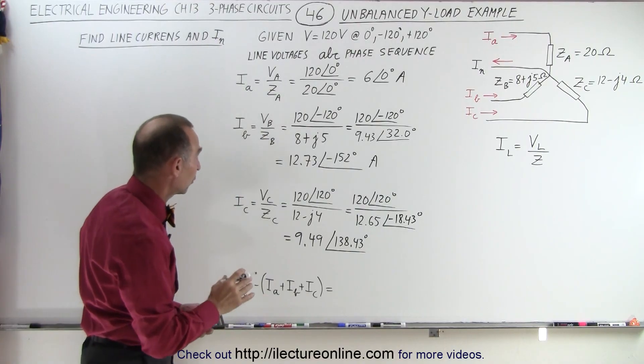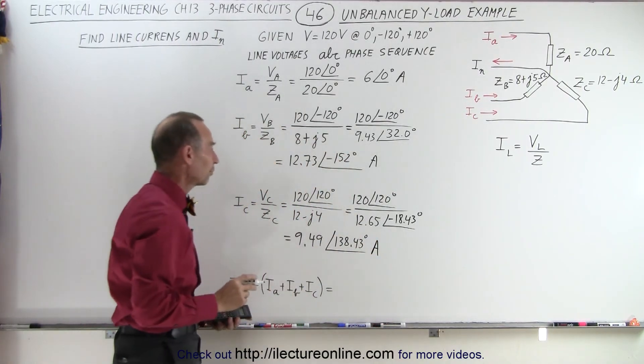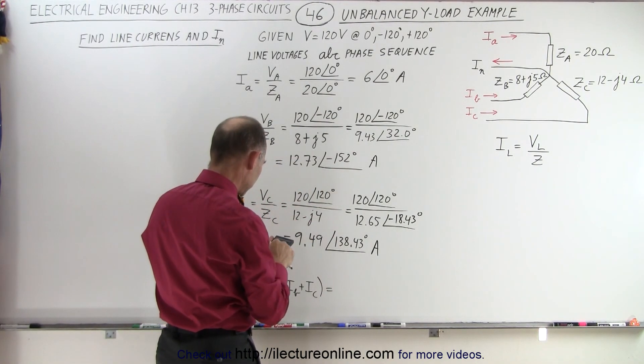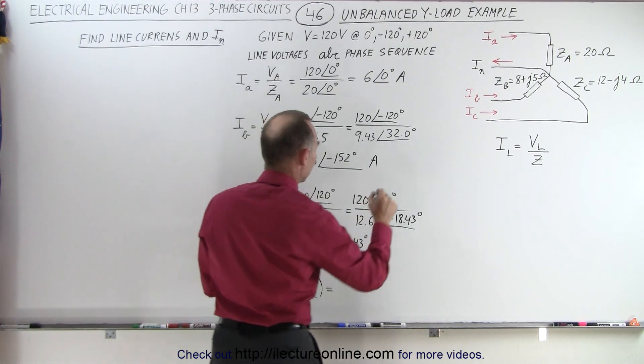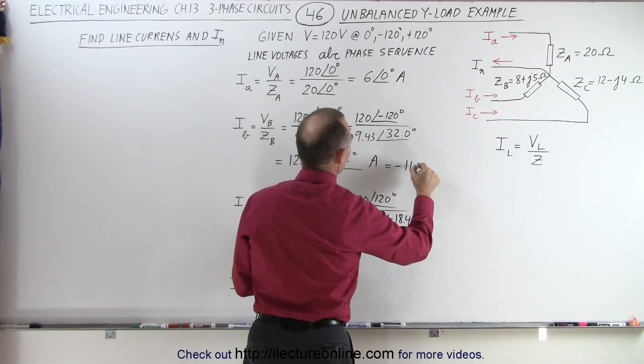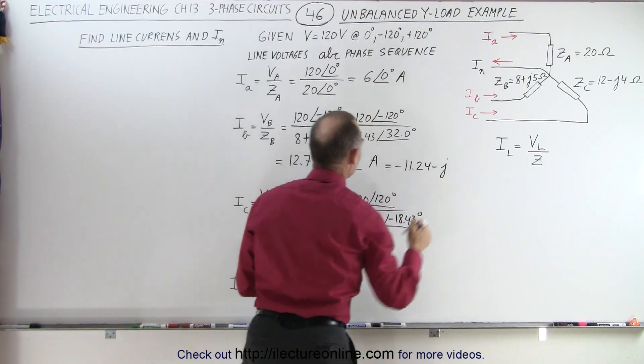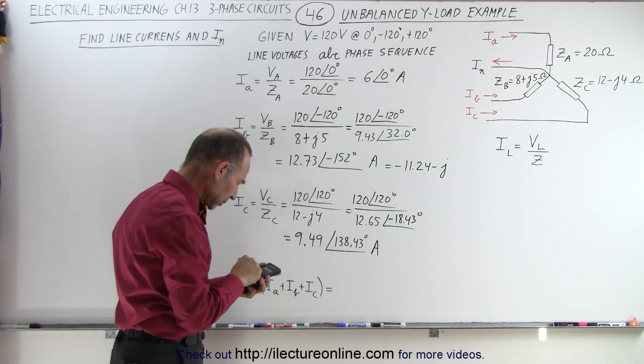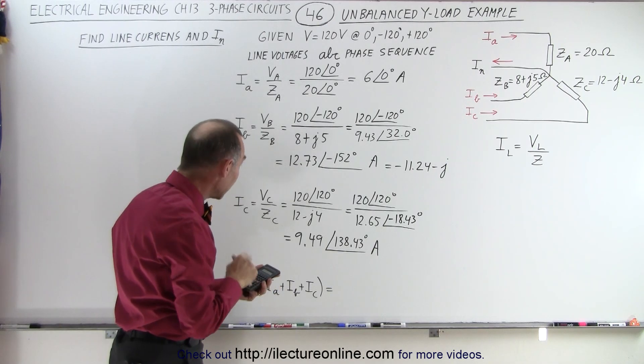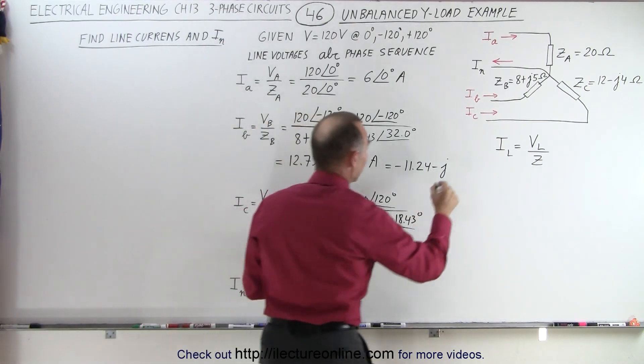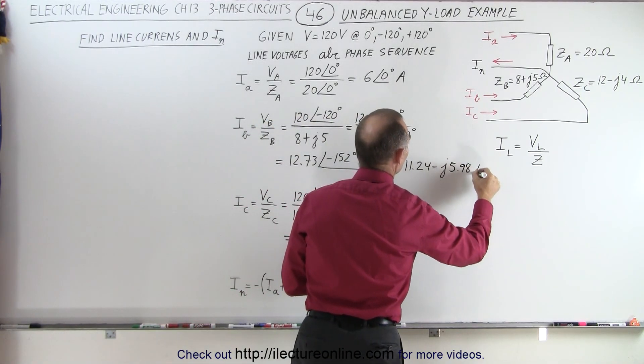Now, if we're going to write each of those currents in amps in terms of the real and imaginary part, we can do that. So here, let's take the cosine of 152, take the cosine of that, and multiply that times 12.73, that's a minus 11.24. And that would be with a minus J, take the sine of 152, and multiply that times 12.73, that gives us 5.98. Of course, that's also in terms of amps.